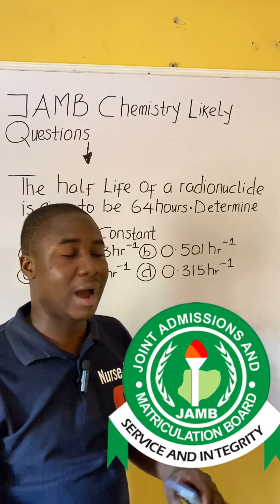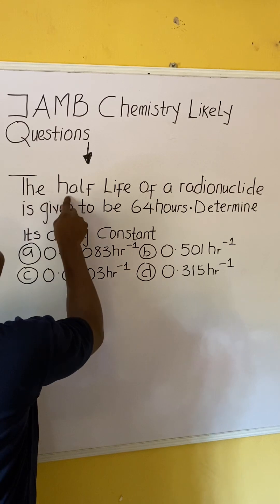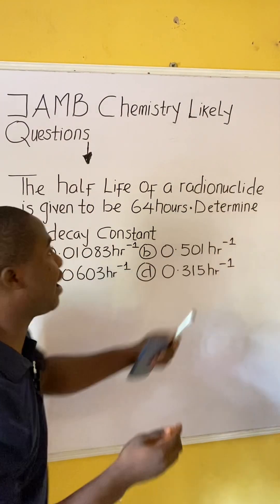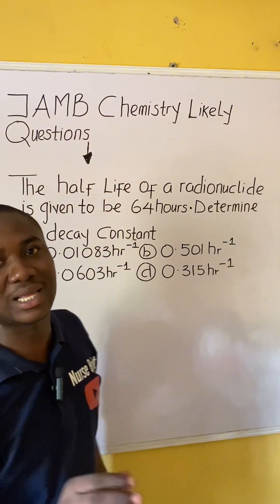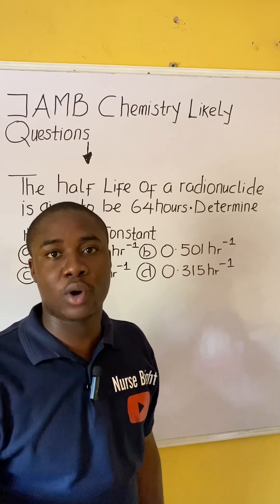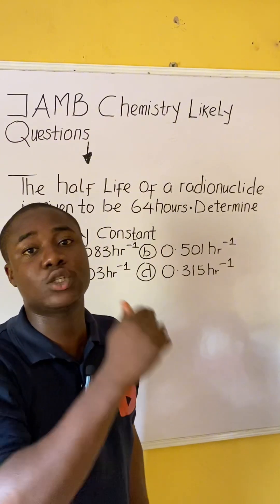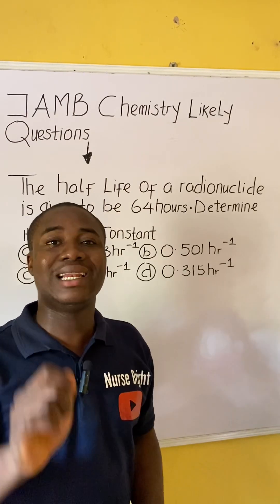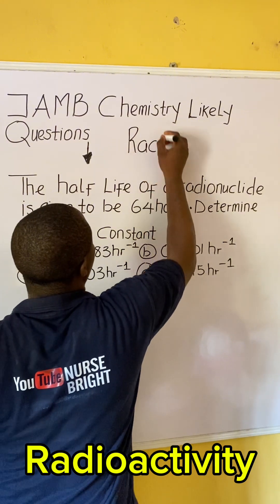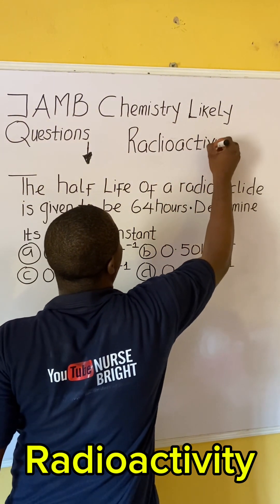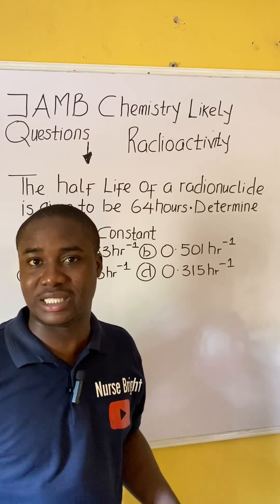Let's say you are writing the JAMB exam and you came across this question — how will you solve it? The question says the half-life of a radionuclide is given as 64 hours, and asks you to determine the decay constant. Before solving any question in chemistry, it is important to know the topic it comes from. From the look of things, this question is from the topic called radioactivity — I can see half-life and decay constant, which confirms it.